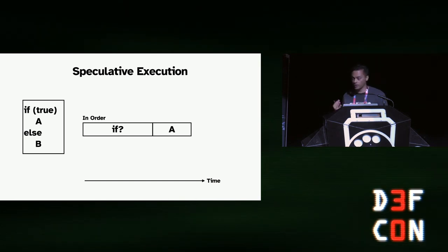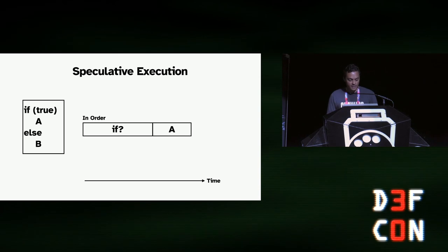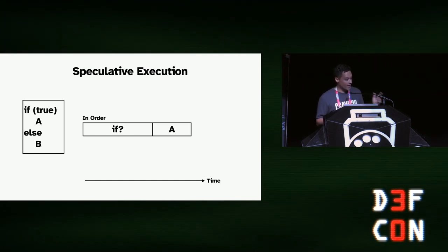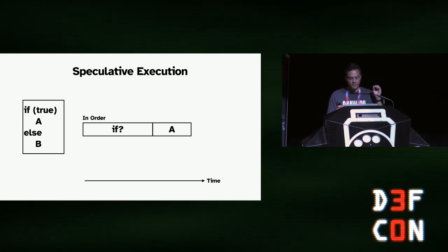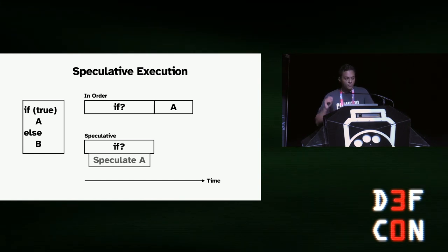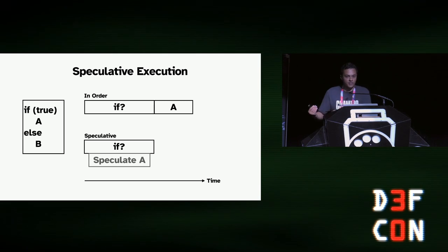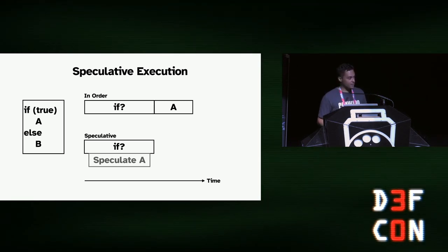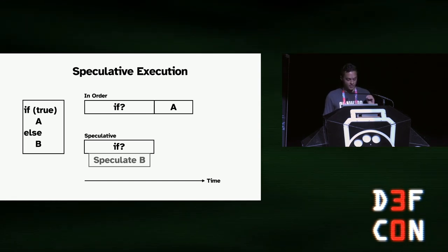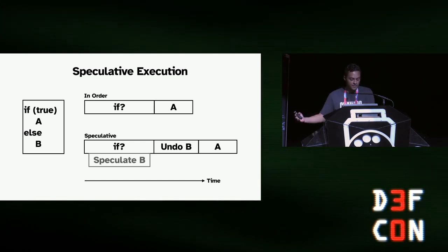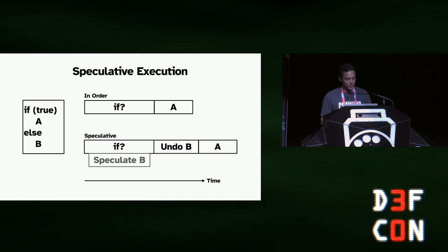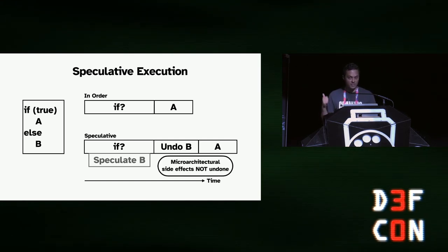We're going to build our processor with speculative execution — the idea is to increase performance. With an in-order CPU, given 'if true do A, else do B,' you have to wait to resolve the branch. But if we speculate the direction, we can predictively begin executing before we know we should. If we misspeculate, we spend extra time undoing the effects. But notice: that undo is only surface level — it doesn't undo every change, just the ones the programmer can see. The microarchitectural side effects of running speculatively are not undone.